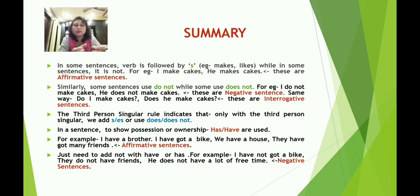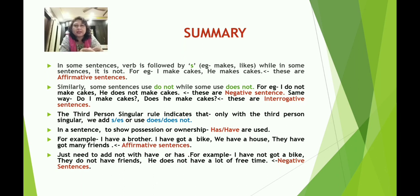To make it negative, we just add 'not' with 'have' or 'has' — for example, 'I have not got a bike,' 'They do not have friends,' 'He does not have a lot of free time.' When 'not' is used, these become negative sentences. That completes session 10. Now let's move to session 11.